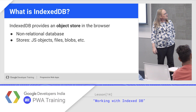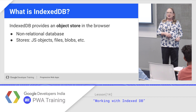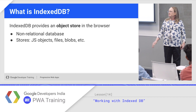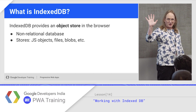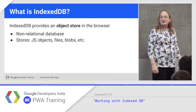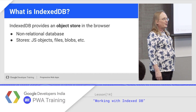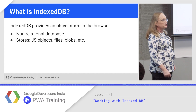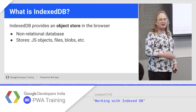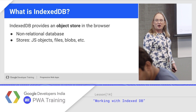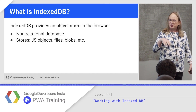IndexedDB is not what you might expect from a database. How many of you have used a SQL database? How many have used a NoSQL database? This is a NoSQL database. So it's not relational. It's not really even tables — it's a set of object stores, which is just a collection of JavaScript objects. They don't all have to be in the same format, although it's a good idea to keep them pretty similar to each other, just for searching and sorting.